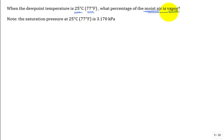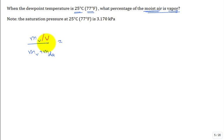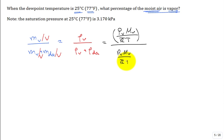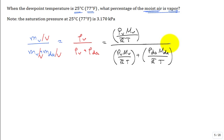When the dew point temperature is 25°C (77°F), what percentage of the moist air is vapor? We want to calculate the percent of the moist air that is vapor: the amount that's vapor divided by vapor plus dry air. Per unit volume, that's the density of the vapor divided by the density of the vapor plus the density of the dry air. Using the ideal gas equation, that's the partial pressure of the vapor times the molar mass of the vapor divided by R-bar T, and similarly for the dry air partial pressure.